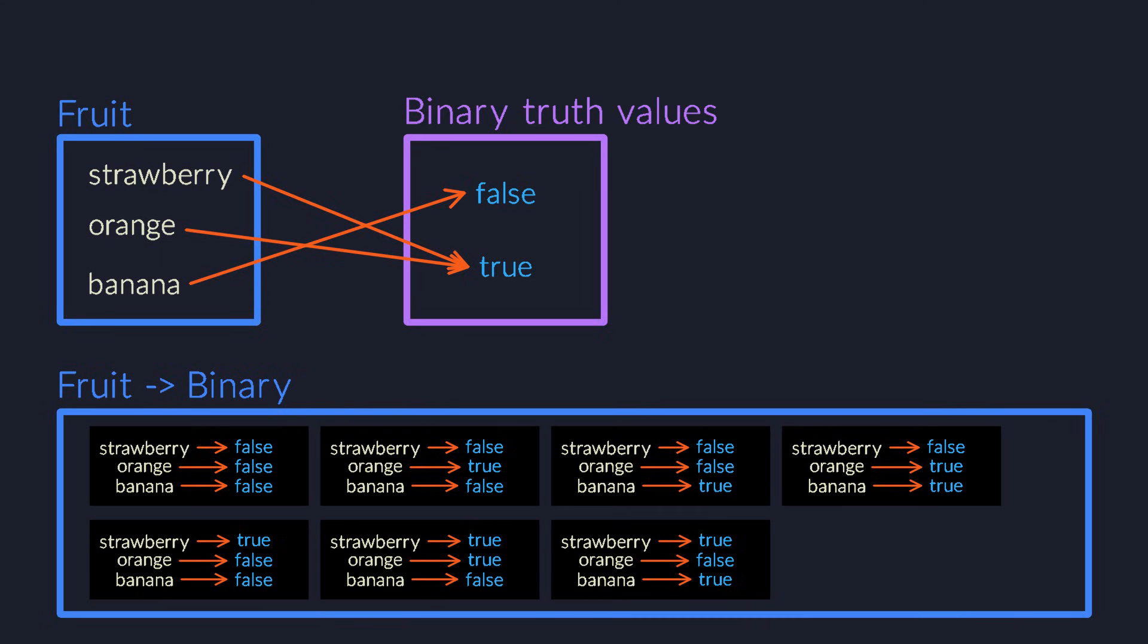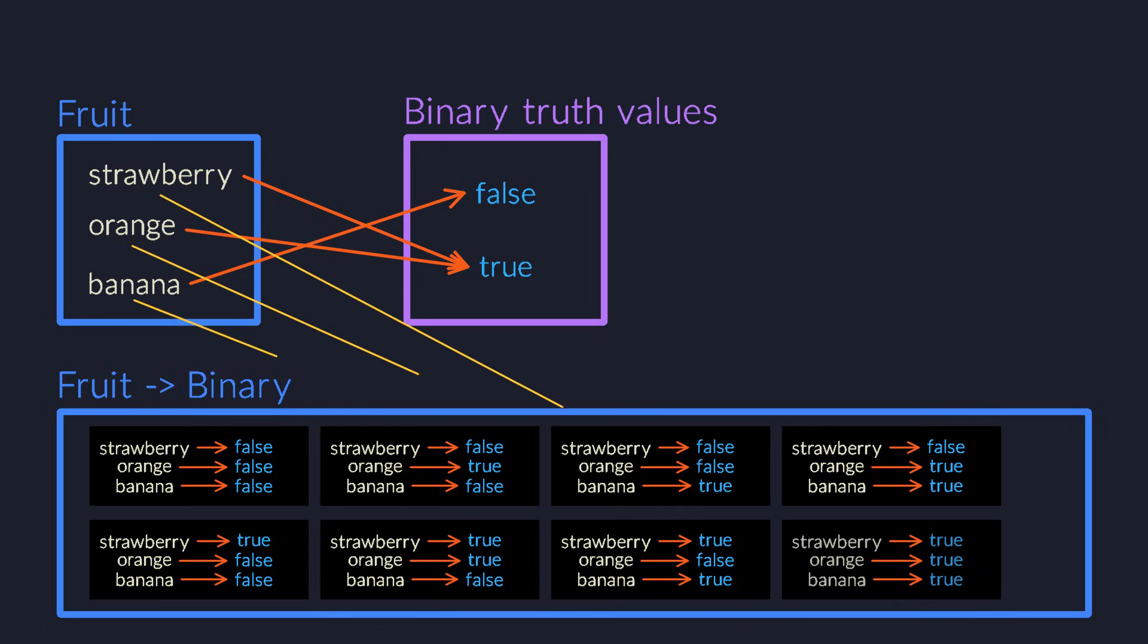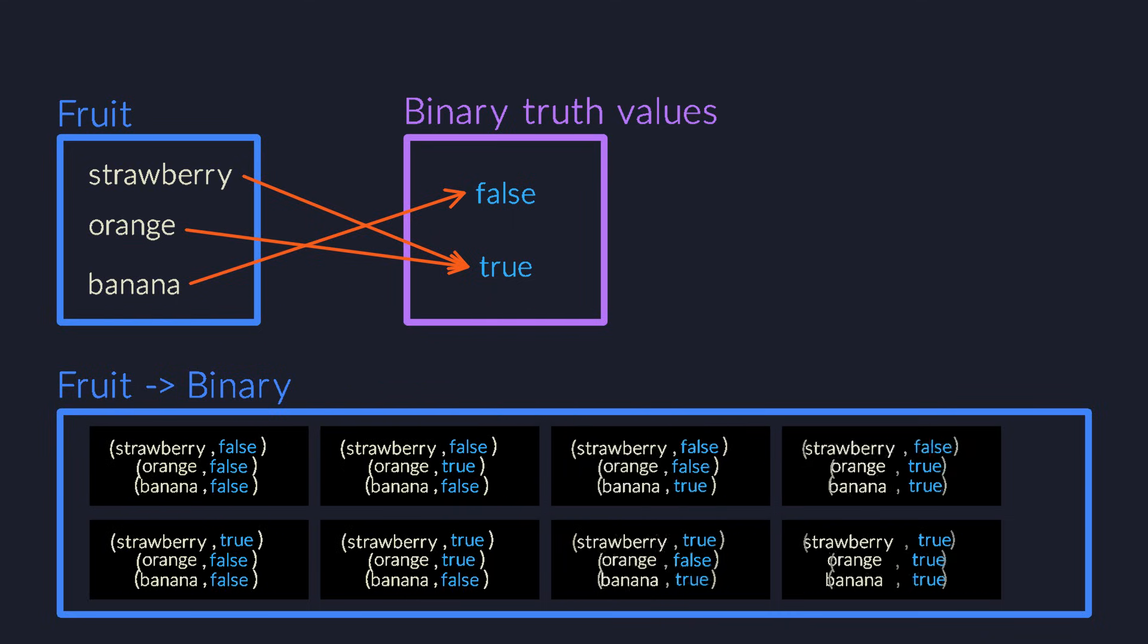How do you construct a function? By pairing precisely one of the possible output values with each of the input values. Yes, I am using the word pairing here because you can model a function as a set of input-output pairs.